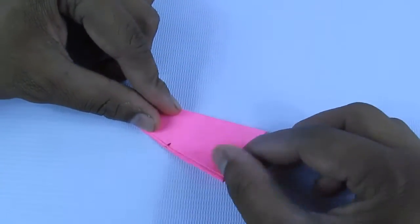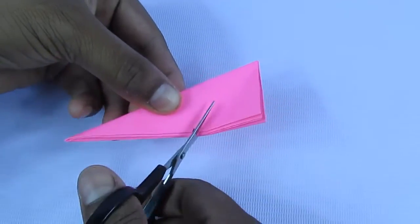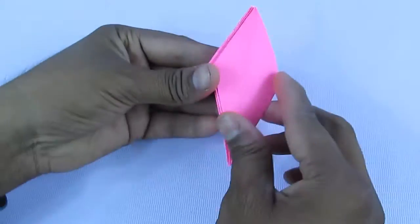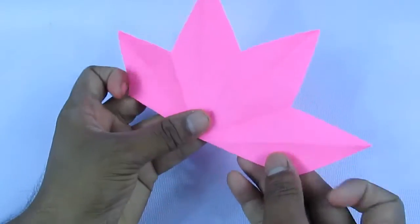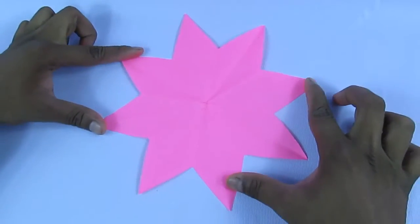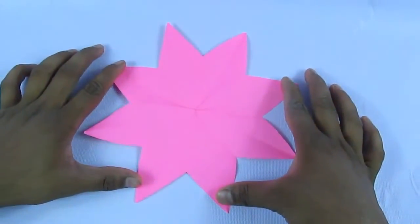This will increase the number of cuts when we open since we are cutting at an angle to the fold. Now when we open, we will see an eight-pointed star instead of an octahedron.